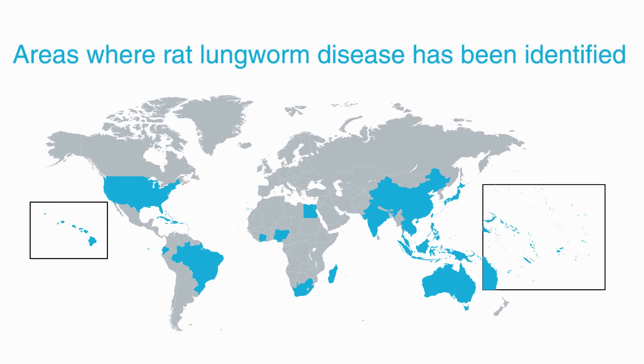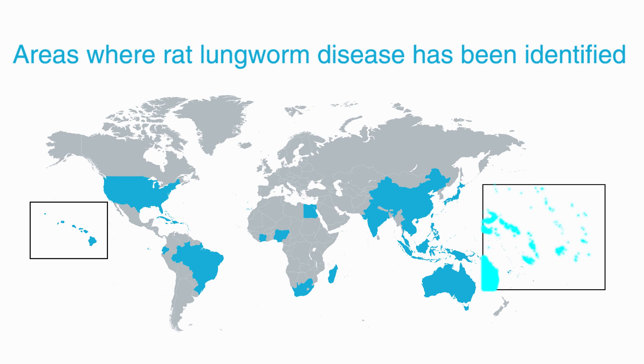Most of the known cases of rat lungworm disease have been in parts of Asia and the Pacific Islands, but some have been in parts of the Caribbean, Africa, and the United States.